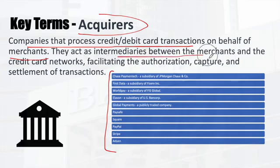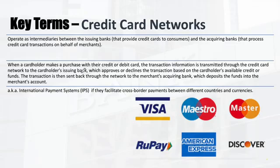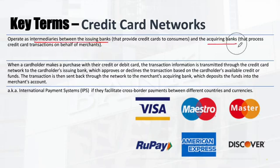Acquirers act as intermediaries between the merchants and the credit card networks, facilitating the authorization, capture, and settlement of transactions. Credit card networks — such as Visa, Mastercard, RuPay, Discover, and American Express — are intermediaries between the issuing bank and the acquiring bank, and we will see them in the flow to understand what they help facilitate.